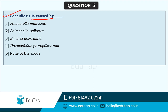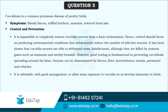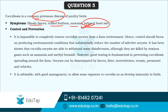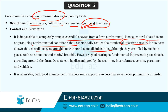Here comes the last question in this lecture: coccidiosis is caused by — coccidiosis is a disease caused by Eimeria acervulina. It is one of the common protozoan diseases observed in poultry birds. Symptoms include bloody feces — that is blood in the feces — ruffled feathers, anemia, and reduced head size. It is impossible to completely remove coccidial oocysts from the farm environment, so control should focus on producing environmental conditions that substantially reduce the number of infective oocysts.